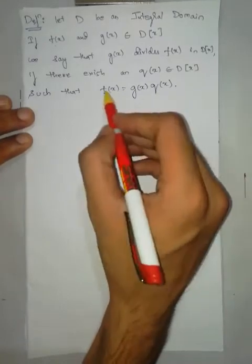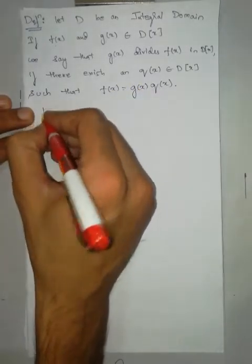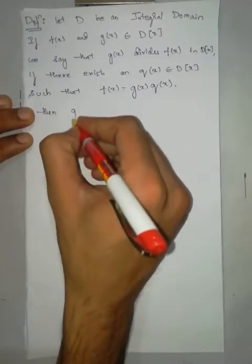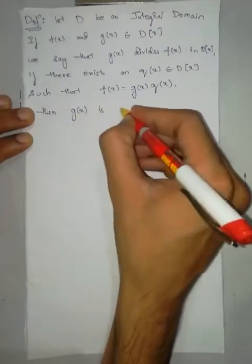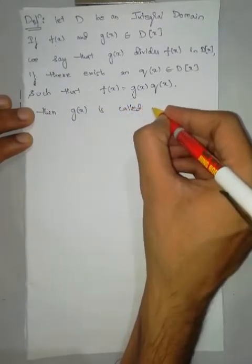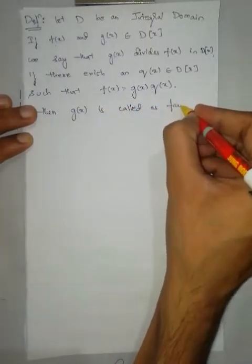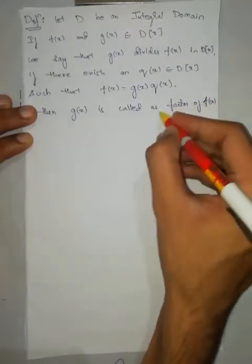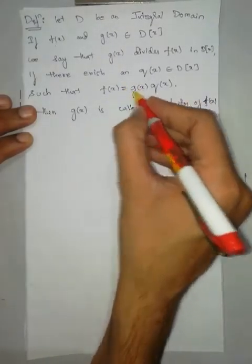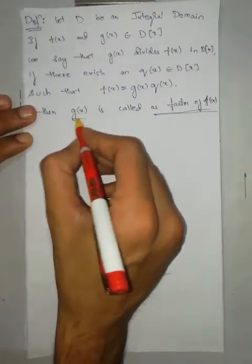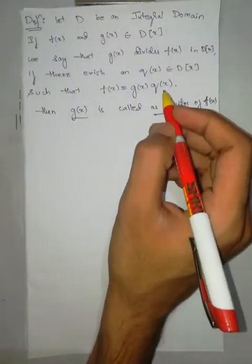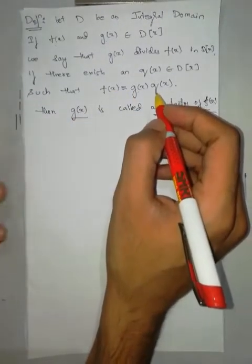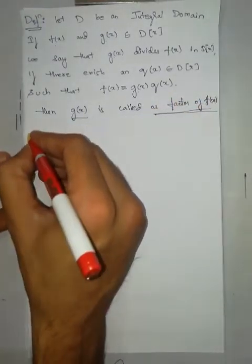In this case, g(x) is called a factor of f(x). That means if f(x) can be written as g(x) times q(x), then g(x) is said to be a factor of f(x).